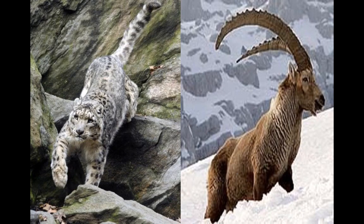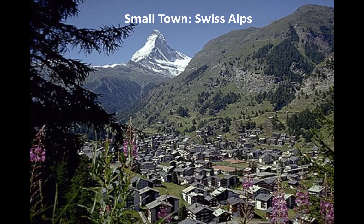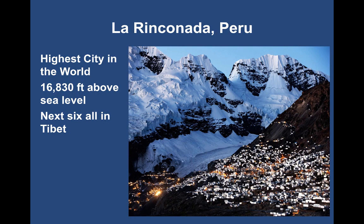Animals in the alpine region include a snow leopard and giant rams — huge, cool animals. Here's a small little town in the Swiss Alps that is very beautiful in the summertime. Some people live way up in the mountains: La Rinconada, Peru is the highest city in the world at 16,830 feet above sea level. If you or I went up there, we would immediately get lightheaded and might get altitude sickness. The next six highest cities in the world are all in Tibet, which typically has the largest population above sea level. There's no actual sanitation system up there, which gets a little dicey, but there's gold and silver in these mountains — and that's why people live there.